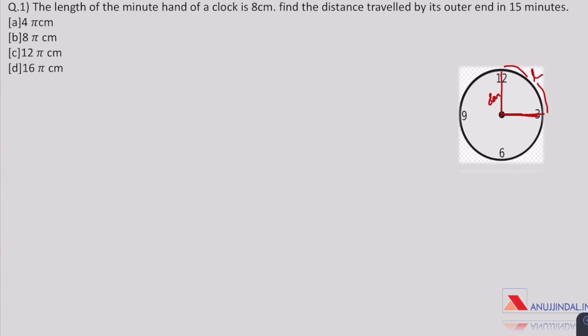As we know the circumference of the circle is 2 pi r and as we can see this portion is going to be 1/4th of the circumference which gives us the answer 4 pi as the value of r is 8 cm.